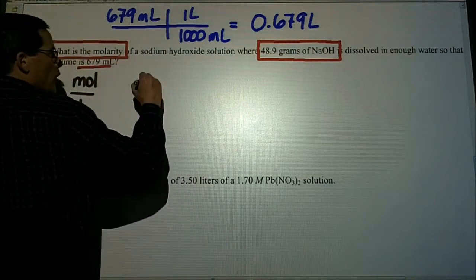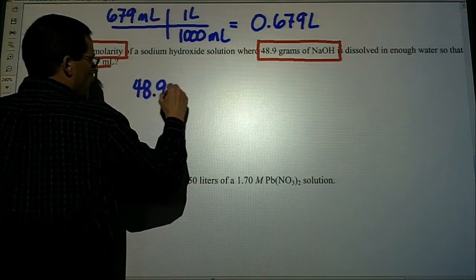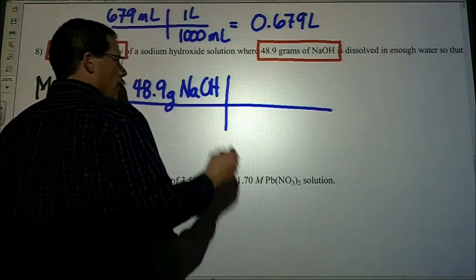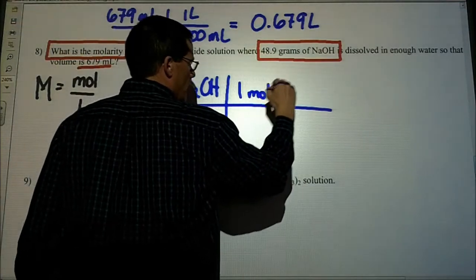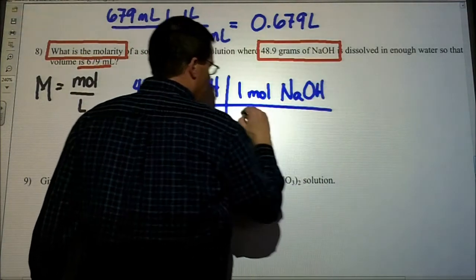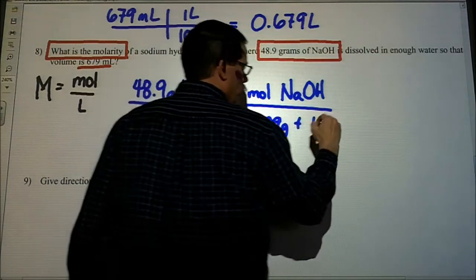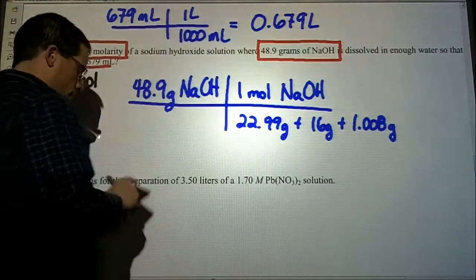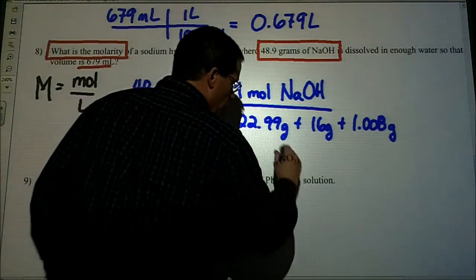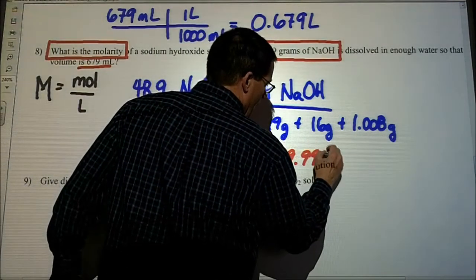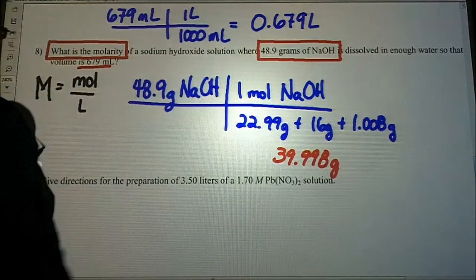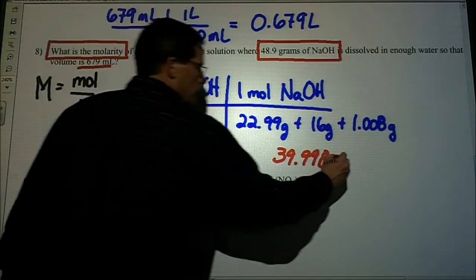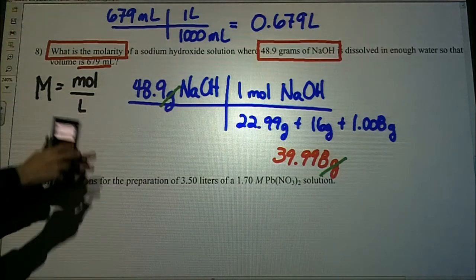With the molarity, we'll start off with our number of grams. We have 48.9 grams, and this is sodium hydroxide. We're going to change our grams into moles. So one mole of sodium hydroxide. We have 22.99 grams of sodium plus 16 grams of oxygen plus 1.008 grams of hydrogen, and that equals 39.998 grams per mole. When we look at this, our grams will cancel and we're left with moles. You can find out how many moles you have, and I'll do that.